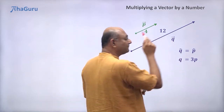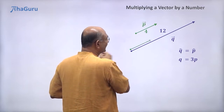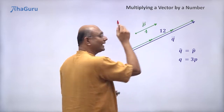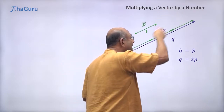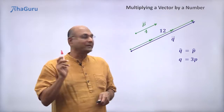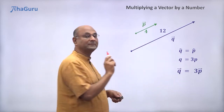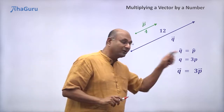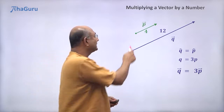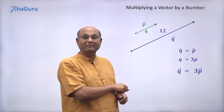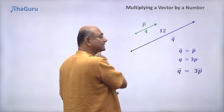So that means q vector has 3 times the magnitude of p vector — q equals 3p magnitude wise. If I take p vector and place it here, then place one more copy and one more copy, I will get q vector. So 3p vector gives me q vector. We can say that q vector is equal to 3 times p vector, which means the magnitude of q vector is 3 times the magnitude of p vector — 12 is 3 times 4 — and the directions are the same.